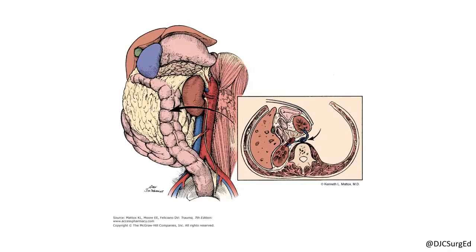The Mattox maneuver, seen here, is a left-sided medial visceral rotation. The left colon is mobilized by taking down the white line of Toldt, and splenic attachments are mobilized as well. The descending colon, spleen, tail of the pancreas, and left kidney are all swept medially to expose the suprarenal aorta.